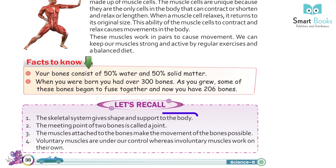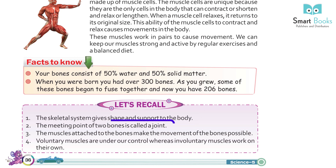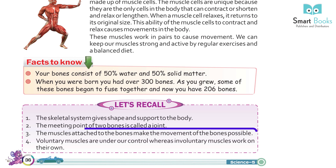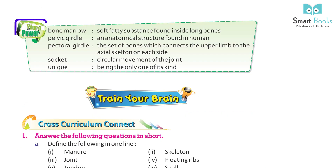Let's recall: 1. The skeletal system gives shape and support to the body. 2. The meeting point of two bones is called a joint. 3. The muscles attached to the bones make the movement of the bones possible. 4. Voluntary muscles are under our control, whereas involuntary muscles work on their own.